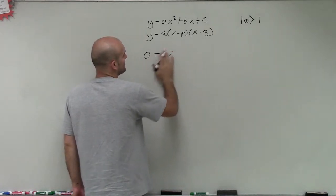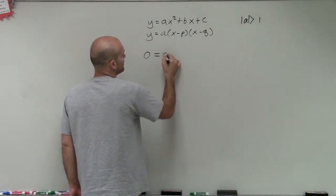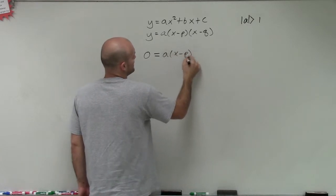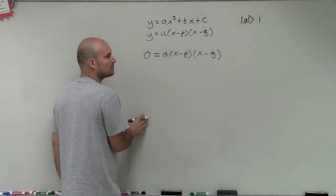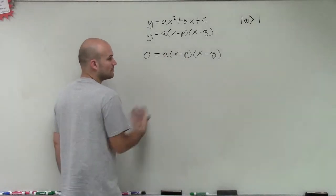And once we can set it equal to 0, it's going to be very important that we have it in the form of our a times x minus p times x minus q. Because then we can apply the zero product property and be able to solve each one of these for x.